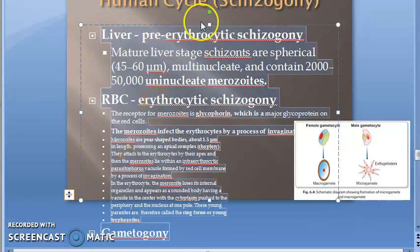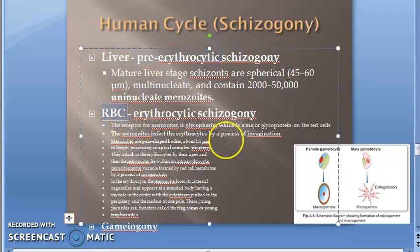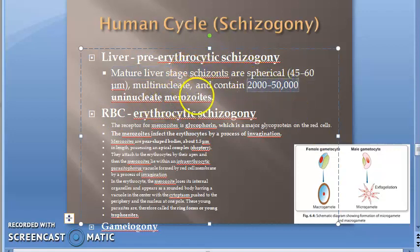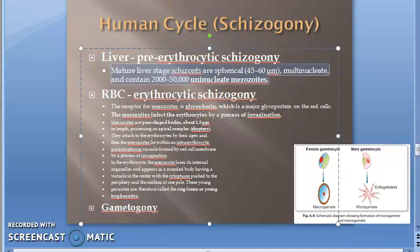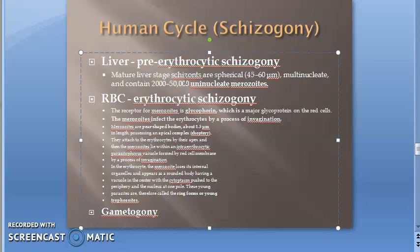The liver stage is called pre-erythrocytic schizogony — 'pre-erythrocytic' because it is before the RBC. Here, one hepatocyte can contain 2,000 to 50,000 uninucleate merozoites. That is the key numerical detail. If they ask you the life cycle, write everything that you know.